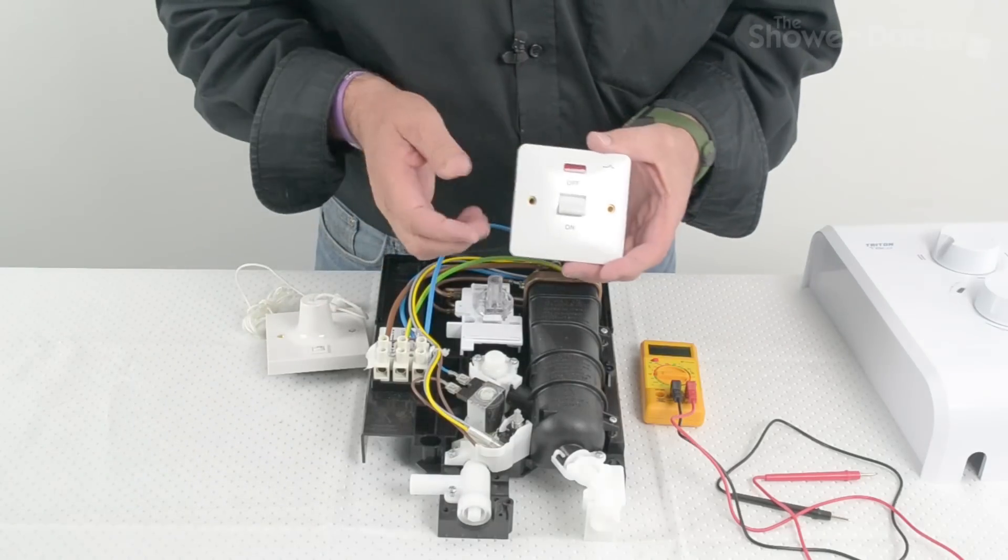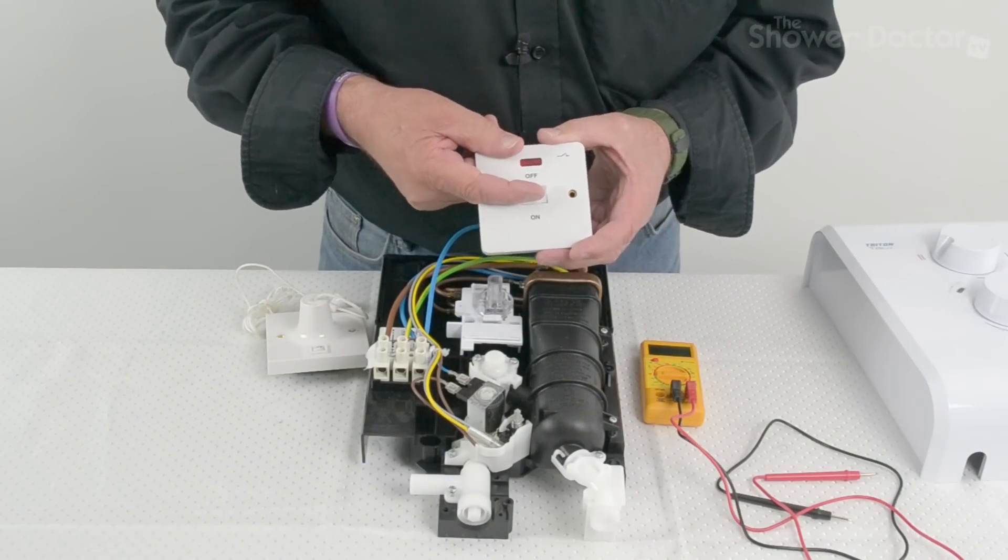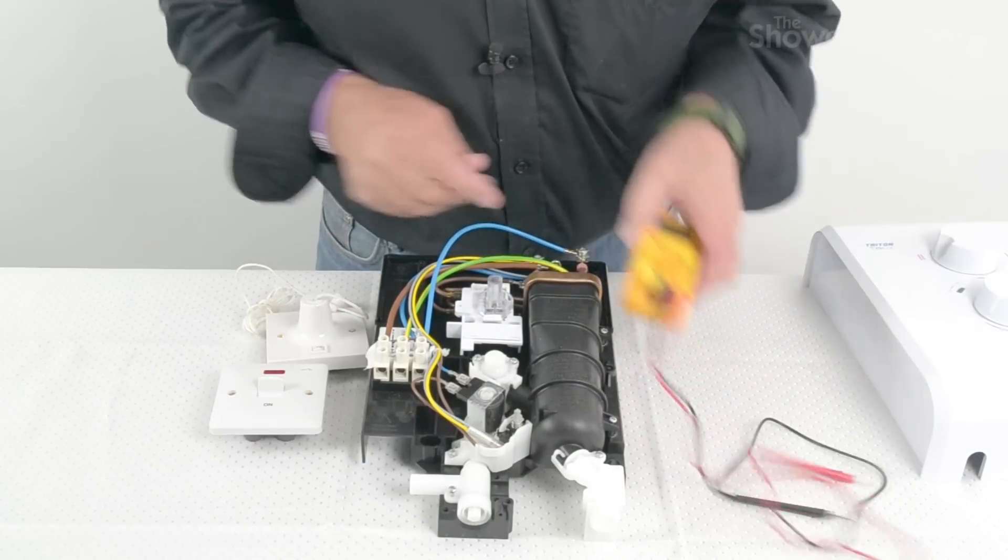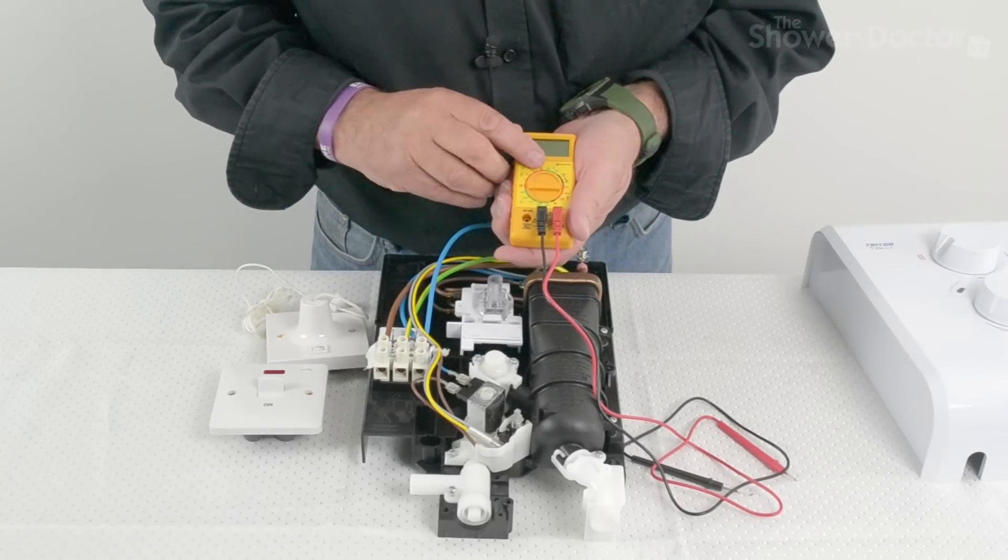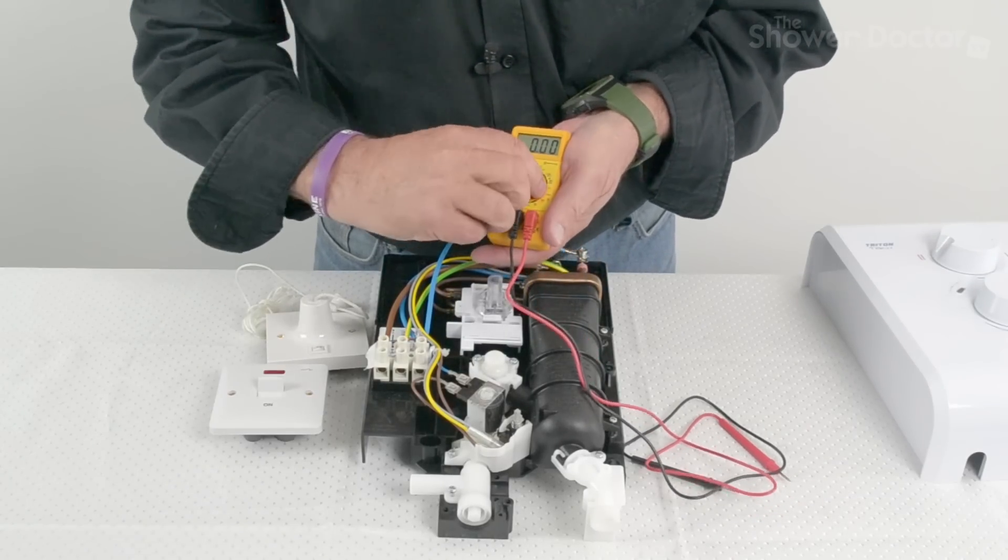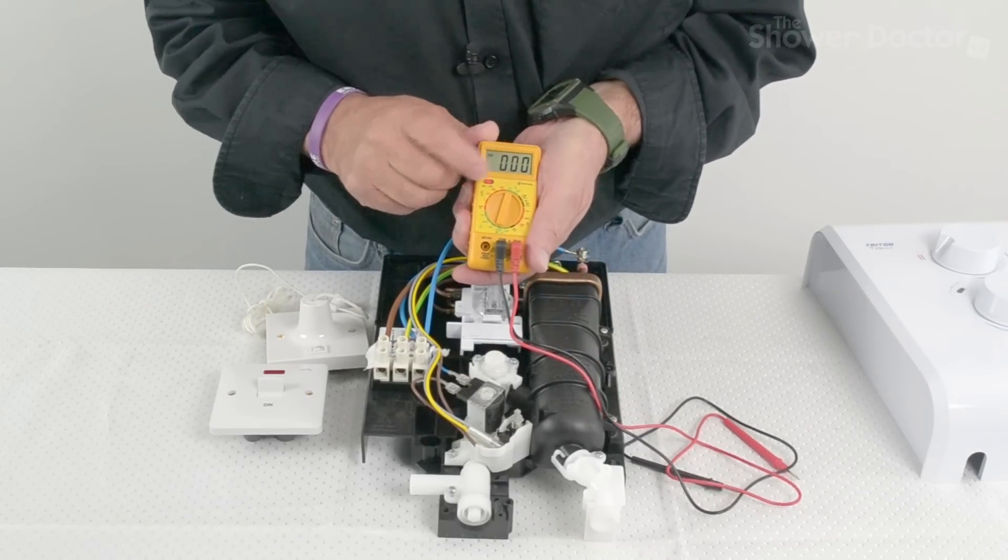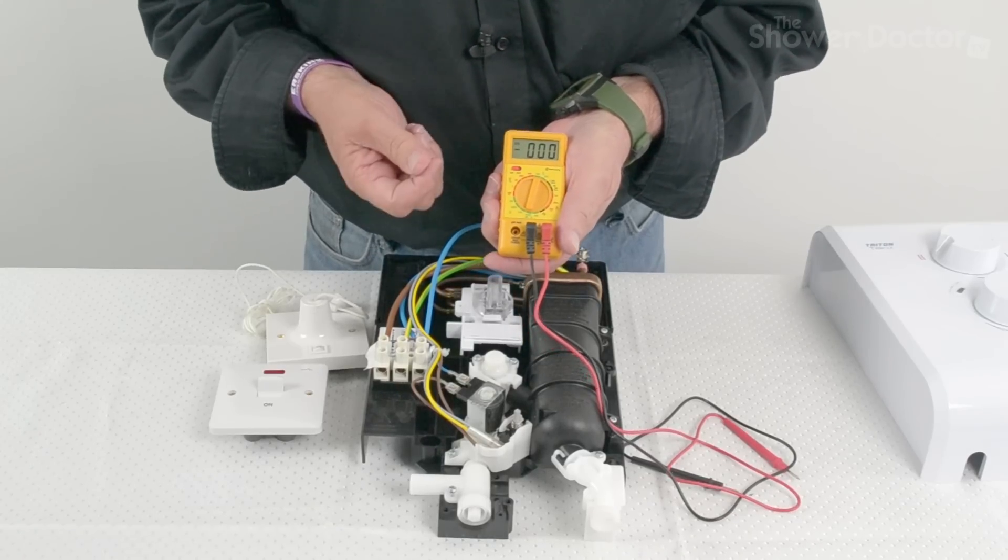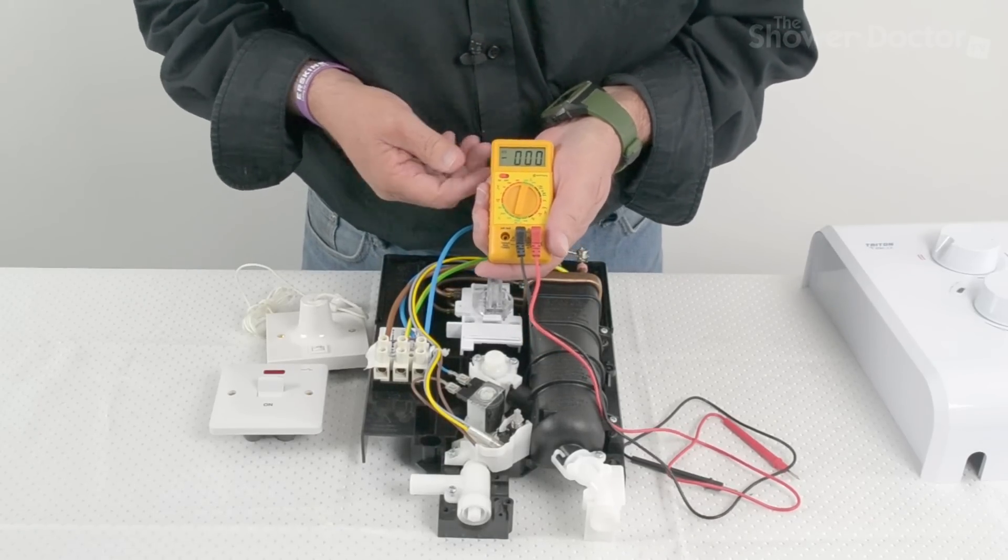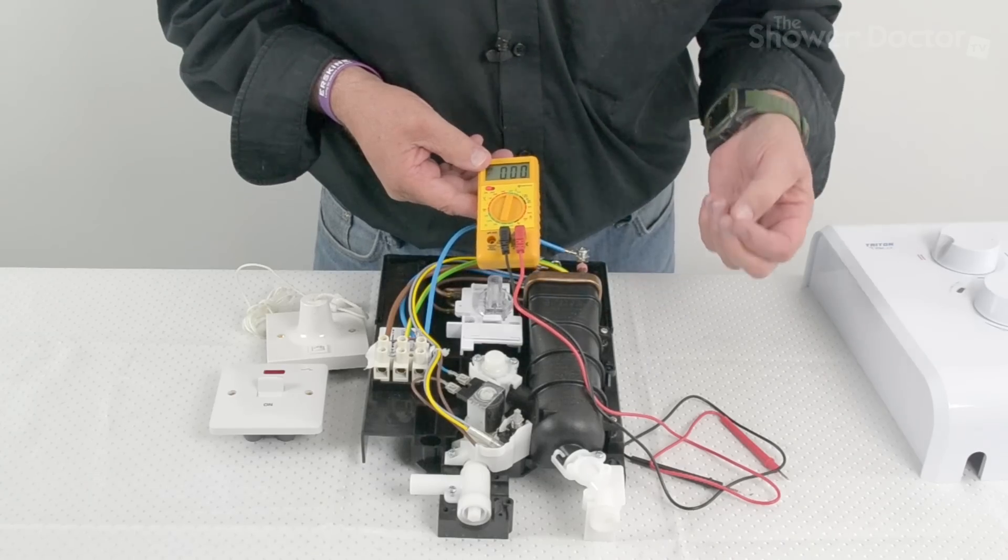Then go back and switch on the power ready to test and see if we're getting power coming to the multimeter. Switch the multimeter on and we've set it to about 300. That's the voltage in the UK is normally 230 volts but it can be anywhere between 220 and 230.